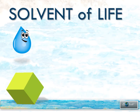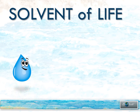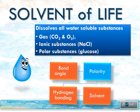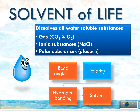First is the role of water as a solvent of life. Water can dissolve everything except lipid-soluble molecules. Water can dissolve gases, ionic substances like salt, and polar substances like glucose. That is why water is also called a universal solvent. The properties that enable water to function as a solvent of life include the property of solvent — a chemical property — and water can be a solvent because it can do hydrogen bonding. It can do hydrogen bonding because it is polar, and it is polar because it has bond angles.